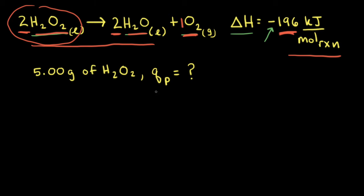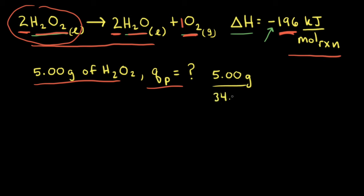Next, let's calculate how much heat is released when 5.00 grams of hydrogen peroxide decomposes at constant pressure. The first step is to find how many moles of hydrogen peroxide we have. We take the mass, 5.00 grams, and divide by the molar mass of hydrogen peroxide, which is 34.0 grams per mole. This gives us 0.147 moles of hydrogen peroxide.